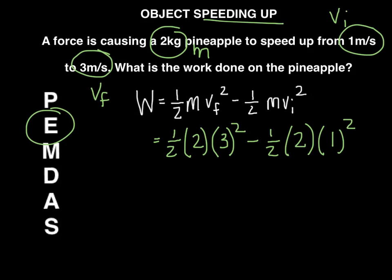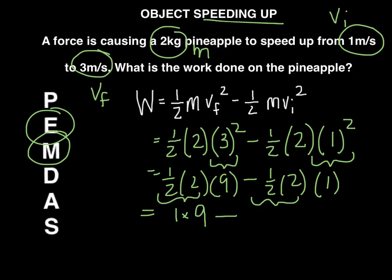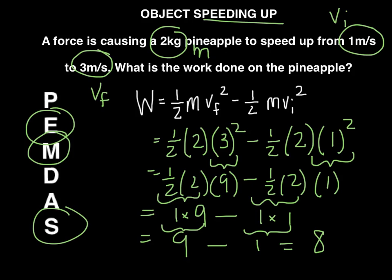Remember from PEMDAS, start with the exponents first. So we have one-half times 2, and 3 squared is 9, minus one-half times 2, and 1 squared is 1. One-half times 2 gives 1, so we have 1 times 9 minus 1 times 1, which is 9 minus 1 equals 8 joules. Notice this is positive work, which makes sense because the pineapple sped up from 1 m/s to 3 m/s.